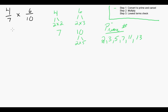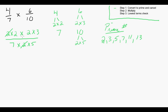Now we're going to rewrite our fraction in terms of prime numbers. So 4 converted to 2 times 2, and we're going to multiply that by 6, so 2 times 3. And in the denominator, we had 7 times 2 times 5. Now we've converted to prime, so our next part of step 1 is to cancel out. We're going to cancel a 2 on the top and a 2 on the bottom. That's going to leave us with 2 times 2 times 3 on the top and 7 times 5 on the bottom.